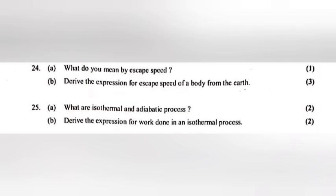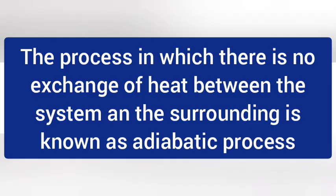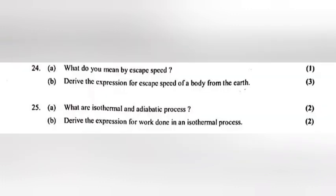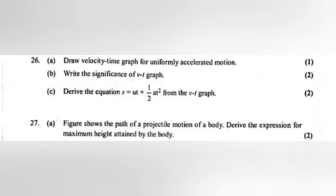Question 25A: What is isothermal and adiabatic processes? Answer: The process during which the temperature of gas remains constant is known as isothermal process. The process in which there is no exchange of heat between the system and the surrounding is known as adiabatic process. 25B: Derive the expression for work done in an isothermal process. Answer: Final answer W is equal to nRT log V2 by V1.